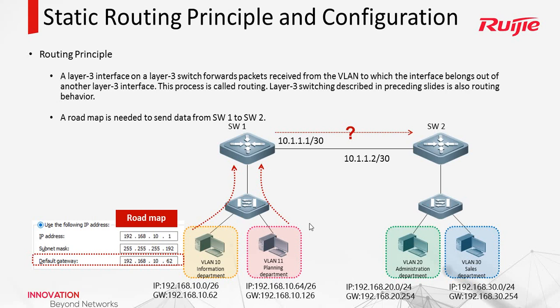In this topology, if this PC needs to forward a packet out of this network, it must pass through the gateway. So a route map is needed to send data from SW1 to SW2. We can configure the gateway IP address using the SVI interface IP address.